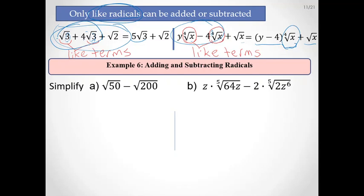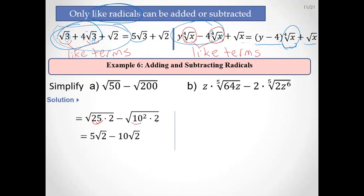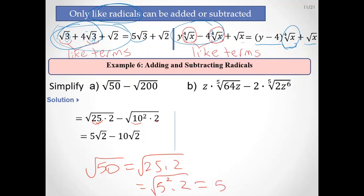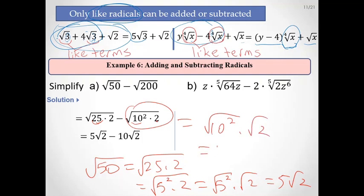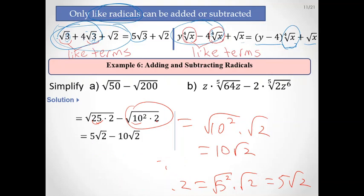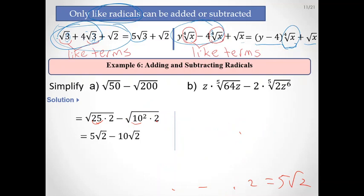Let's simplify √50 − √200. Write √50 = √(25·2) = 5√2, and √200 = √(100·2) = 10√2. Then 5√2 − 10√2 = −5√2. It's like 5 apples minus 10 apples equals −5 apples.